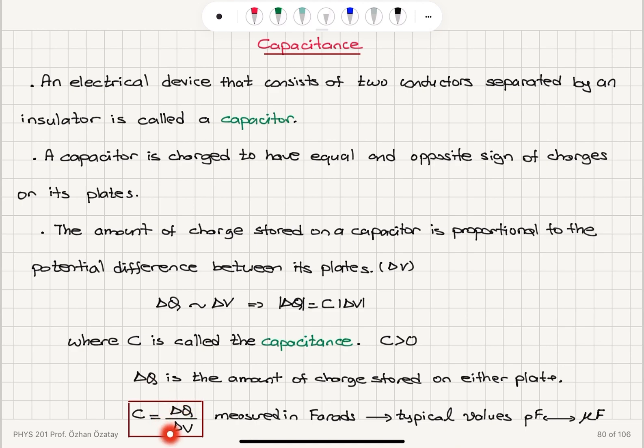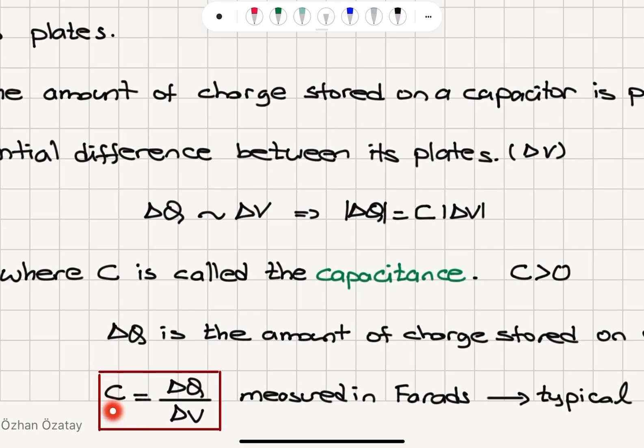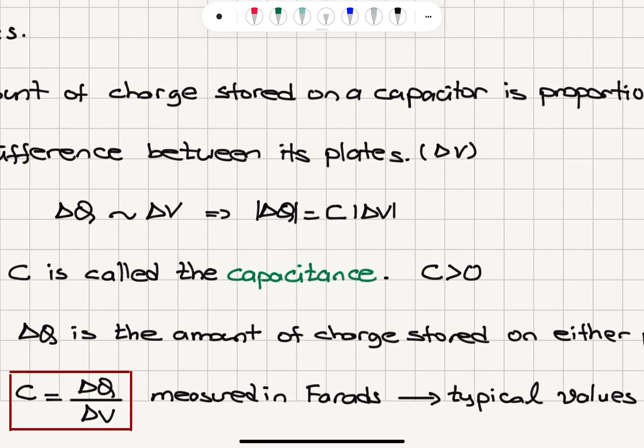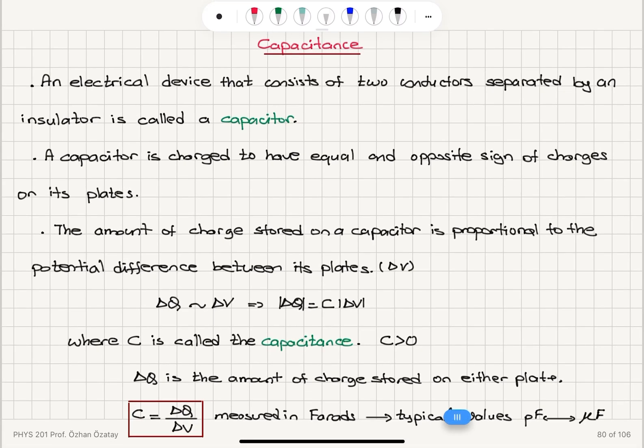So the capacitance is delta Q over delta V. Once again, it's the capacity to store charge under the application of a potential difference. The SI unit of capacitance is farads. It's measured in farads. What are the typical values of capacitance? Picofarads to microfarads are typical values we can easily find in the market.